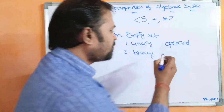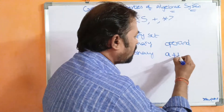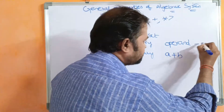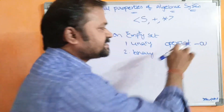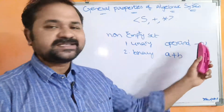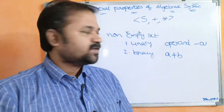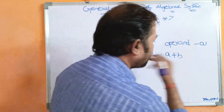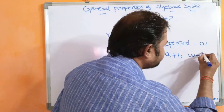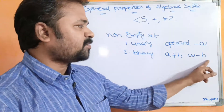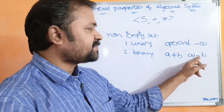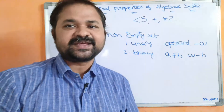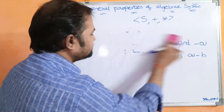Binary means performing an operation on two operands. For example, A plus B — here, plus is called a binary operation. In minus A, this minus is called unary minus because we are performing the operation on a single operand. Whereas in A minus B, we are performing the operation on two operands, so that minus is called binary minus.